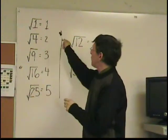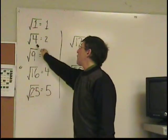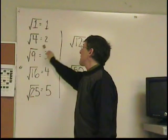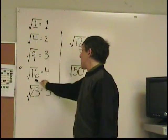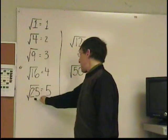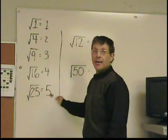So the perfect square of 1 is 1. The square root of 4 is 2. The square root of 9 is 3. The square root of 16 is 4. The square root of 25 is 5.